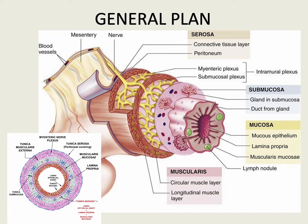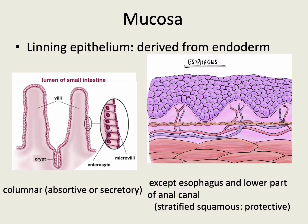Now we will discuss each layer in detail. The lining epithelium of the mucosa is columnar all over the gut, except in the esophagus and in the lower part of the anal canal where it is stratified squamous epithelium. The stratified squamous epithelium has a protective function in these structures, whereas the cells of the columnar epithelium are either absorptive or secretory.